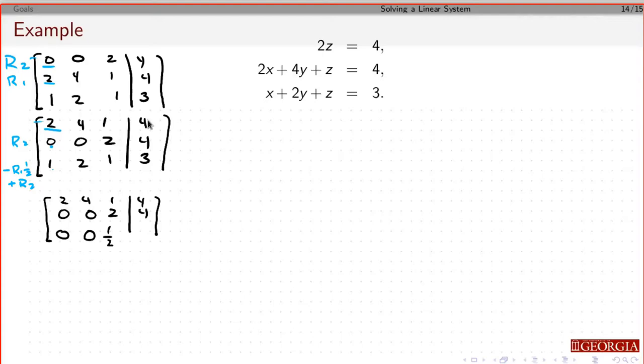And then, let's see, so I've got to be careful here. This is the top row, so minus 1/2 times 4 is minus 2, plus 3 is 1.